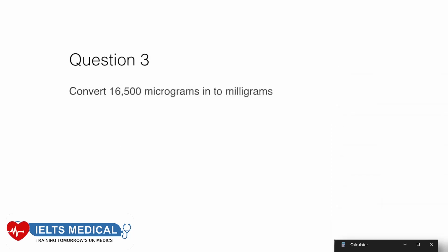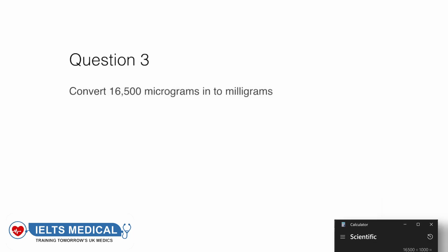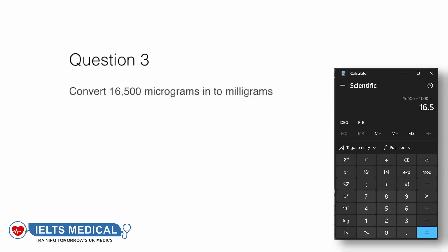Question 3: convert 16,500 micrograms to milligrams. That's dividing by 1000, so the answer is 16.5 milligrams.